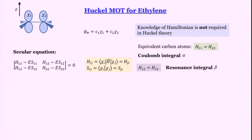h12 and h21 are written as the resonance integral beta — this should remind us of our discussion of the H2+ problem. Here we have one atomic orbital in the bra vector, another atomic orbital in the ket vector, and the Hamiltonian in the middle. This is a quantum mechanical quantity called the resonance integral. So h12 equals h21, and we call it beta. Beta is actually a negative quantity, as we will discuss later.